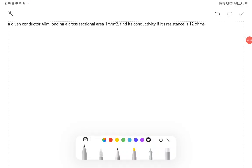A given conductor 40 meters long has a cross sectional area of 1 mm squared. Find its conductivity if its resistance is 12 ohms. First things first, we have to find our given values. We are given the length which is 40 meters, the cross sectional area which is 1 mm squared, and the resistance which is 12 ohms.